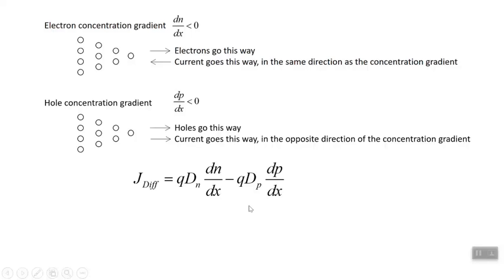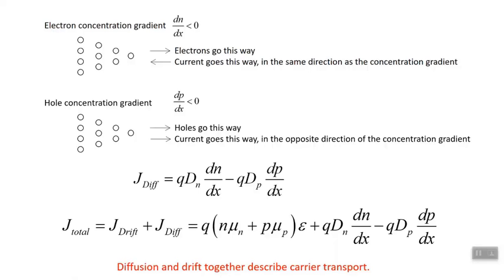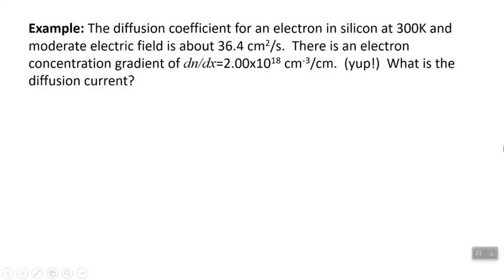Now let's include drift as well, since both types of current are happening simultaneously. The total current density is the drift current density plus the diffusion current density. Here's the expression for drift current density from previously, and now we add in the diffusion current density terms. That is the total current density — it's a mouthful but it's all there. We have conductivity sigma multiplying the electric field, and separate diffusion coefficients for electrons and holes, since electrons diffuse more readily through a semiconductor than holes. Together these two current densities describe what's called carrier transport.